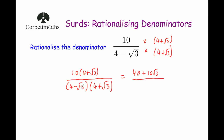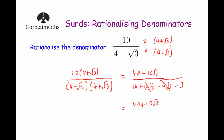On the denominator, we're going to use FOIL to expand the brackets. So 4 times 4 would be 16. 4 times plus root 3 would be plus 4 root 3. Minus root 3 multiplied by 4 would be minus 4 root 3. And finally, minus root 3 times root 3 — remember root a times root a is a — so that's minus 3. The plus 4 root 3 and the minus 4 root 3 cancel out nicely. That's why we multiply by the conjugate — so the surds cancel. That gives us 16 take away 3, which is 13.